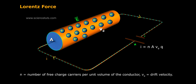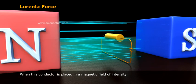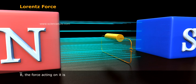n stands for number of free charge carriers per unit volume of the conductor, and v_d stands for drift velocity. Therefore, I dL equals q n A v_d dL equals q n A v_d dL, since v_d and dL are in the same direction.